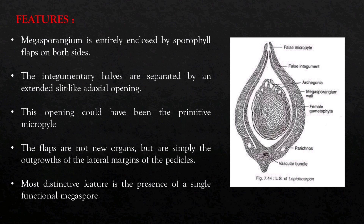General Features. The megasporangium is entirely enclosed by sporophyll flaps on both sides. On seeing the picture, we can clearly understand that the megasporangium is entirely enclosed by the sporophyll flaps. The silk-like structure separates the integument into halves. This opening is represented as the micropyle. The flaps are not a new organ — they are the outgrowth of the pedicels.